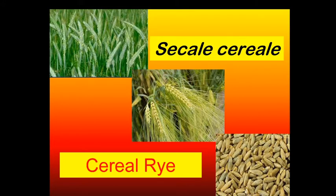The next is cereal rye, also called sekale cereale. It is used for making flour, also used as fodder, for making bread, and commercially it is used for making beer, whiskey, and vodka.